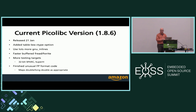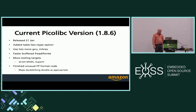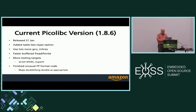One of the big additions in 1.8.6 was a tableless ctype implementation. Somebody pointed out that the ctype table was 384 bytes — and if you call a couple of isblank or isascii calls in your application, that pulls in 384 bytes of a static table. That's a huge amount of space when you have 4K of RAM in some devices.